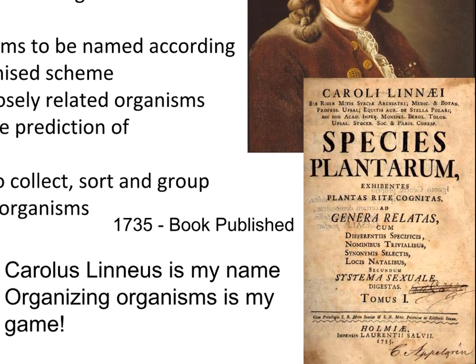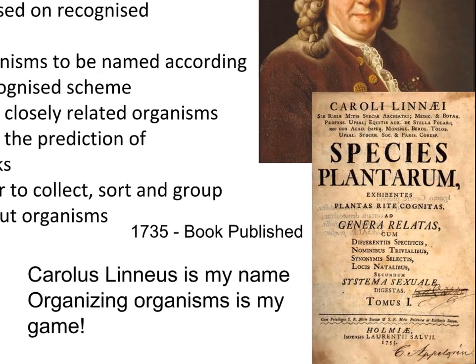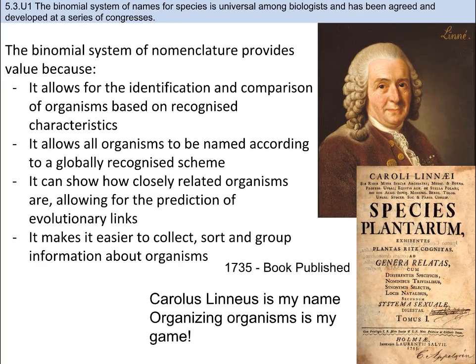In 1735, Linnaeus published his book outlining the first system, called the Binomial System of Nomenclature. Carolus — let's just call him Carl — would have people send him organisms from all around the world as they came across them. Carl collected organisms and decided to organize them, and he was super successful. Linnaeus' system was adopted around the world and is a unifying naming convention.